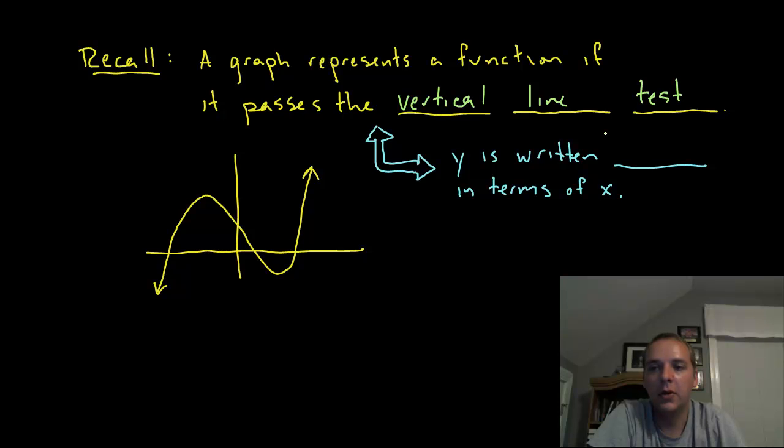So hopefully you are familiar with that test. If you are not, you can watch a video on it, but basically what it says is that if you are able to pass a vertical line from left to right across the graph and it crosses at most one time, then your graph is a function.